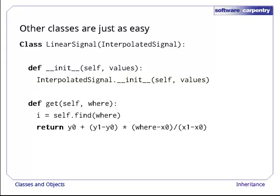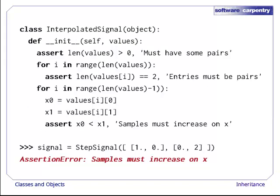Step signal is asking interpolated signal to do whatever it thinks it has to when it's creating a new object. And here's the new linear signal. Its constructor is the same. It just asks the parent class to do whatever it needs to do. The beauty of this is that there's now exactly one place to make a change when we need to. For example, if we want to change the kind of exception that's raised when someone tries to get a value for a point that's out of bounds, we change interpolated signal dot find and we're done. Similarly, if we want to check that the samples are actually pairs and in order, which we should have been doing all along, we can add that code to the parent class and both of the child classes will automatically get it.